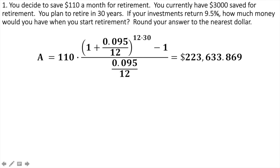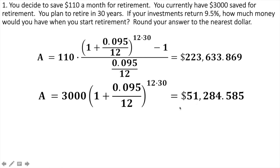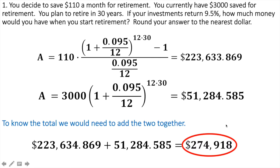My next one is $3,000 now saved for 30 years at 9.5% compounded monthly — that's where my 12 comes in. Notice I did not round this one either — it's $51,284.585. Now what I'm going to do to find the total amount is add these two together. I take my $223,000-and-change and add it to my $51,000-and-change, and I round right here at this step. I don't round before then — I round to the nearest dollar at this very last step, not at each individual calculation.